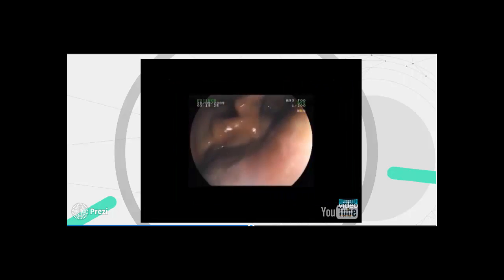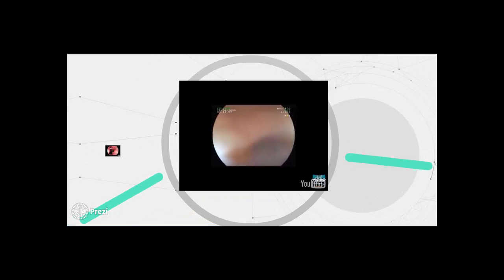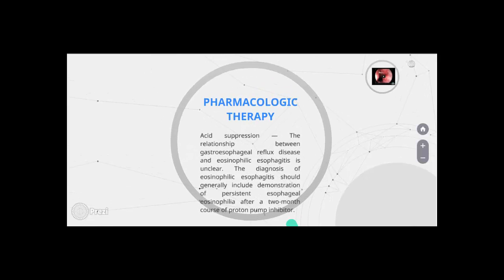This patient is submitted to our endoscopy unit because of recurrent cough and severe dysphagia. Pharmacologic therapy — Acid suppression: the relationship between gastroesophageal reflux disease and eosinophilic esophagitis is unclear. The diagnosis of eosinophilic esophagitis should generally include demonstration of persistent eosinophilia after a 2-month course of proton pump inhibitor therapy.